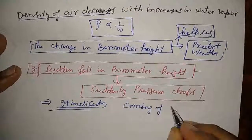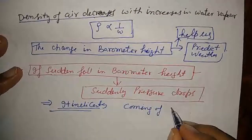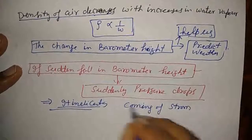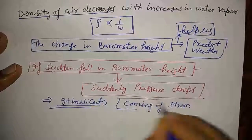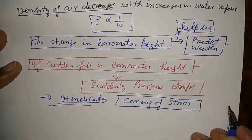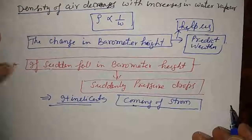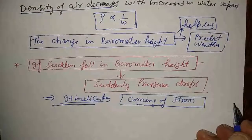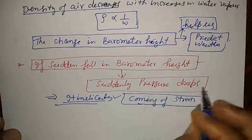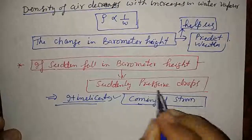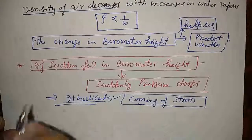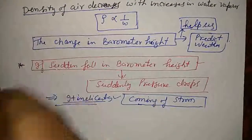This indicates the coming of a storm. High-momentum wind with dust can come if there is a sudden drop in air pressure. That is the first prediction.